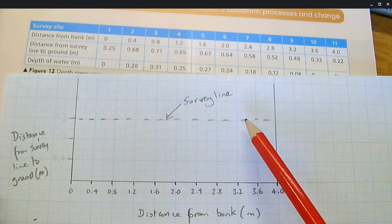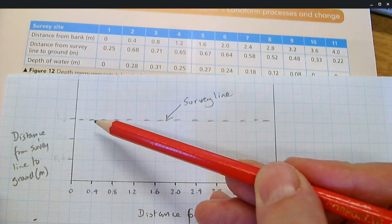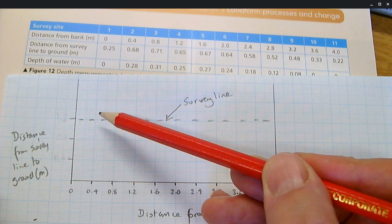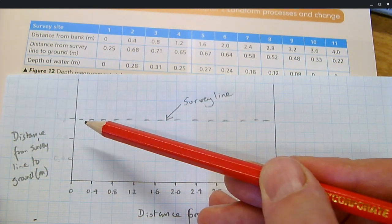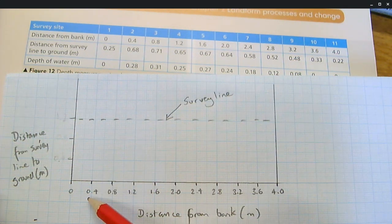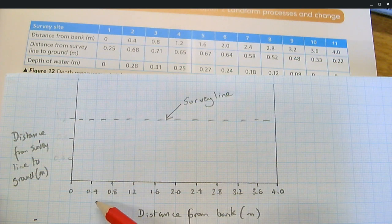And then from this survey line, at 40cm intervals, we're measuring the depth from the survey line down to the ground, as in the river bank or the side of the river. So we've got it in 40cm intervals coming across here. So one square for 40cm.